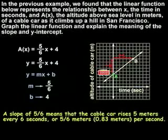To explain the meaning of the y-intercept, notice that the y-intercept has the coordinates 0, 4. In other words, when x, the time, is 0 seconds, then y, the altitude above sea level, is 4 meters. So, when no time has passed, the altitude of the cable car is 4 meters. Or, stated another way, the cable car is 4 meters above sea level when it starts climbing the hill.